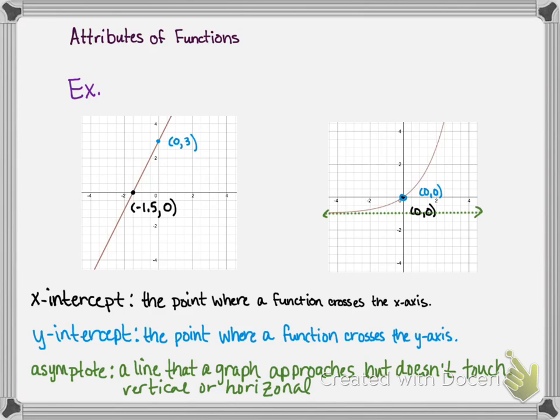The first function doesn't have an asymptote but the second function, the exponential function, has an asymptote at the line y equals negative 1. So the function gets closer and closer to this line but never quite gets there.